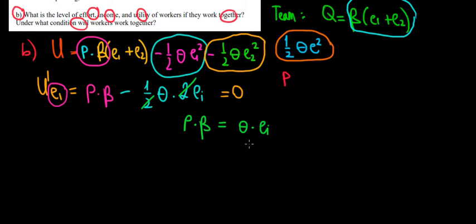If we divide both sides by theta, what do we get? The optimal effort level of the first worker, and the second worker as well, equals p times beta divided by theta.